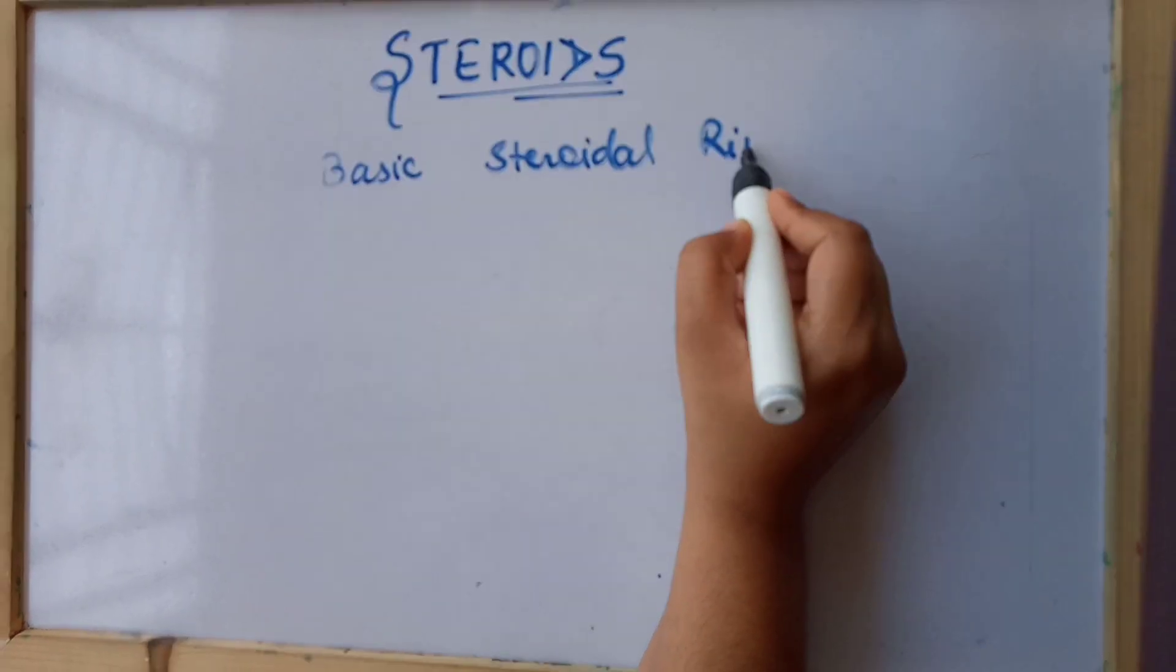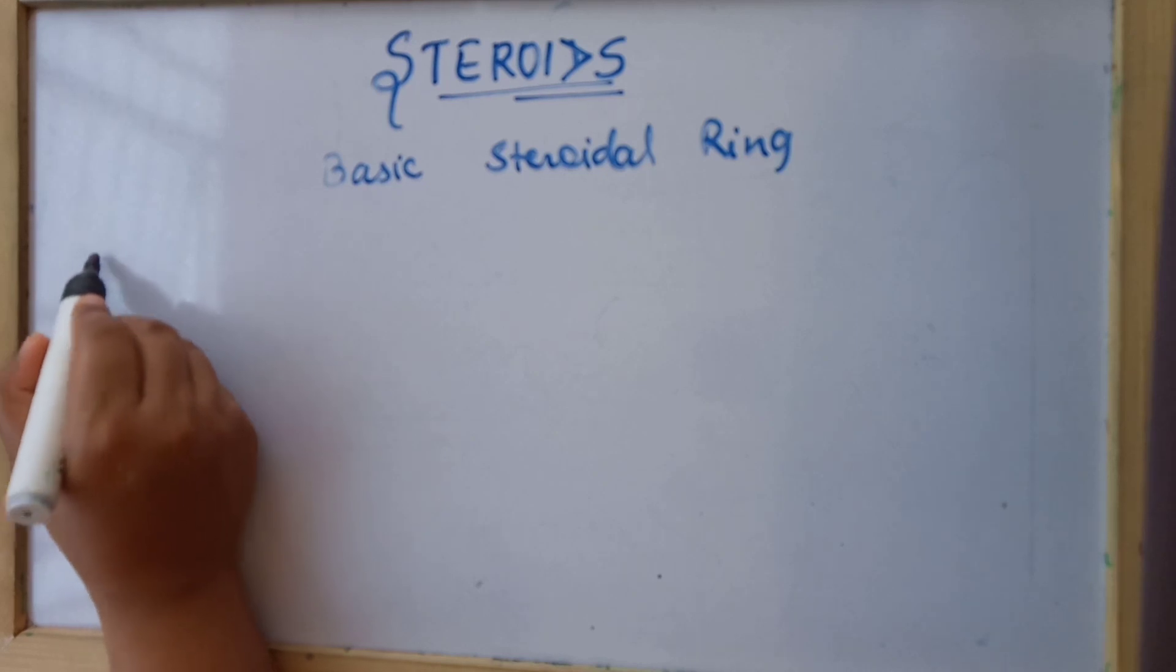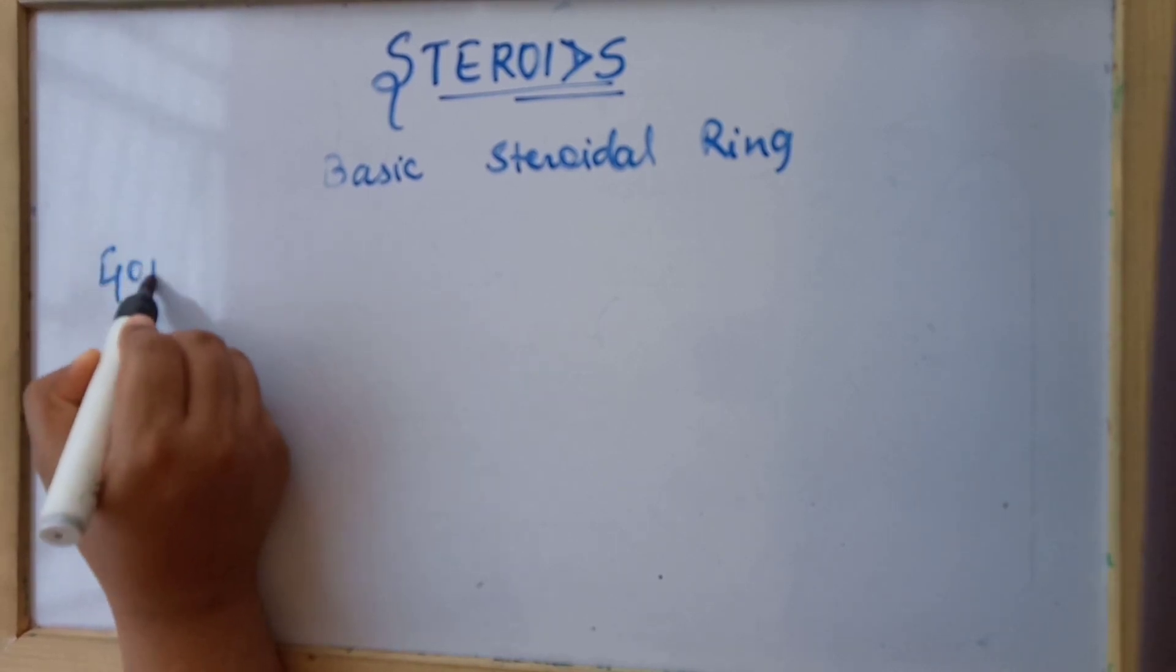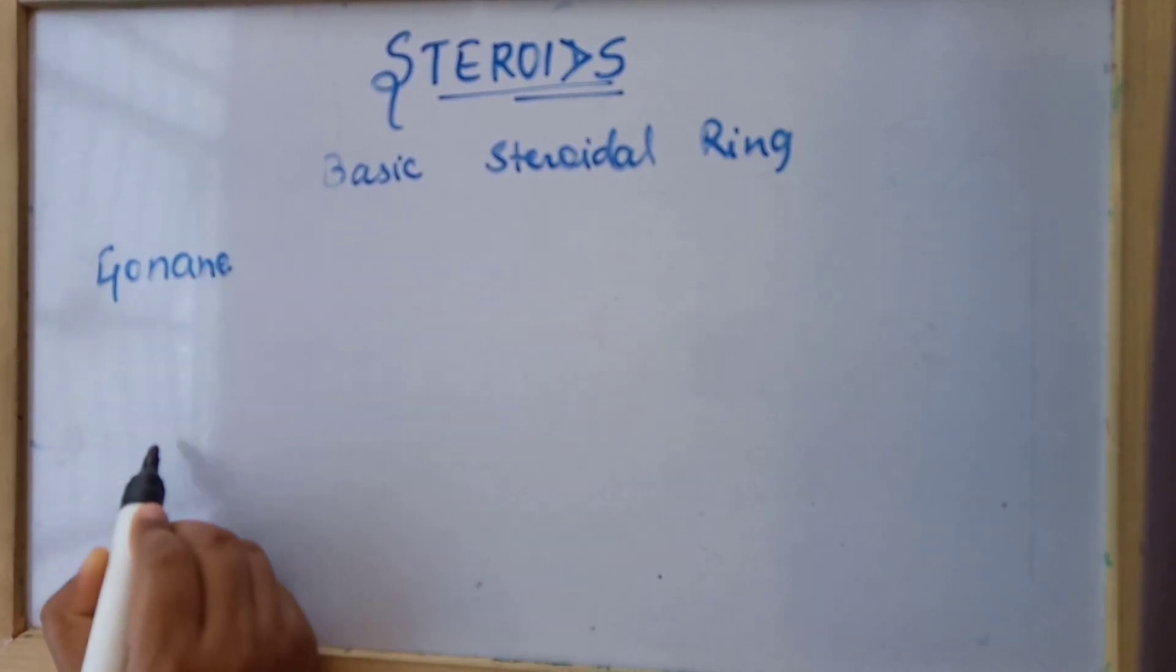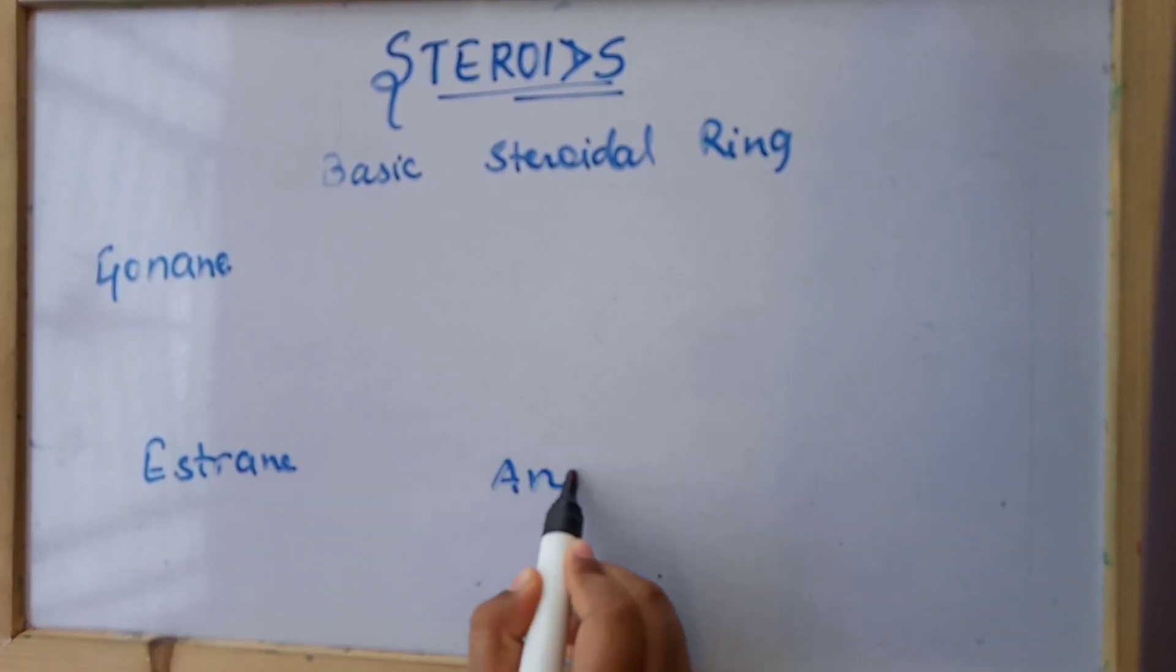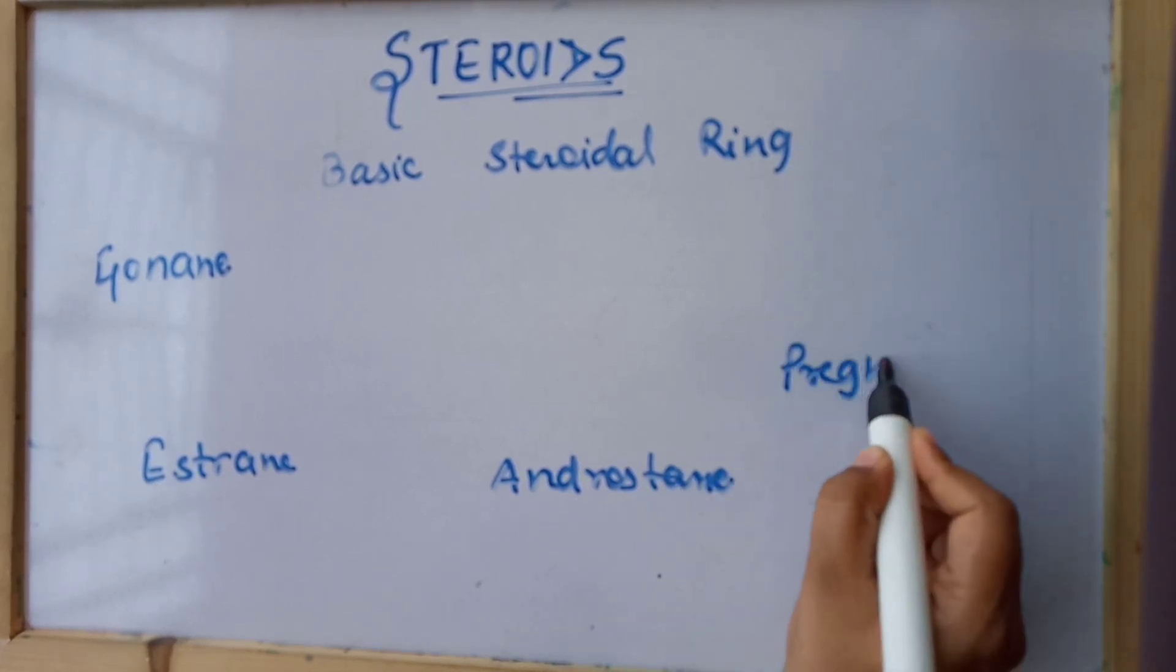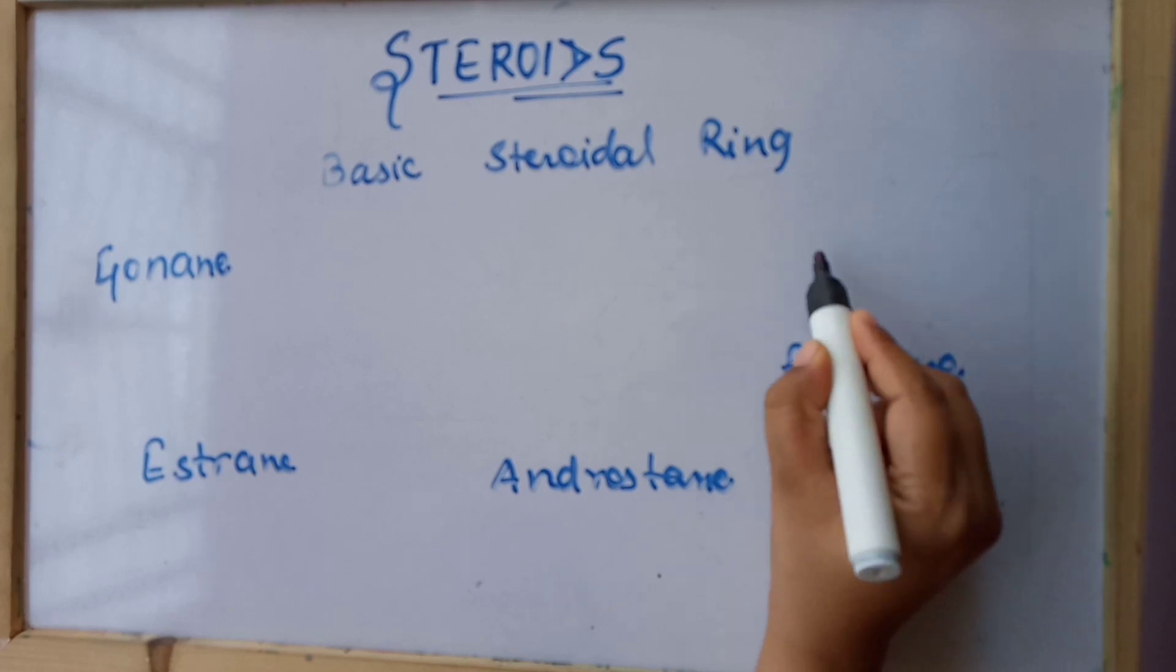As you know, the basic steroidal rings are gonane, estrane, androstane, pregnane, and cholestane.